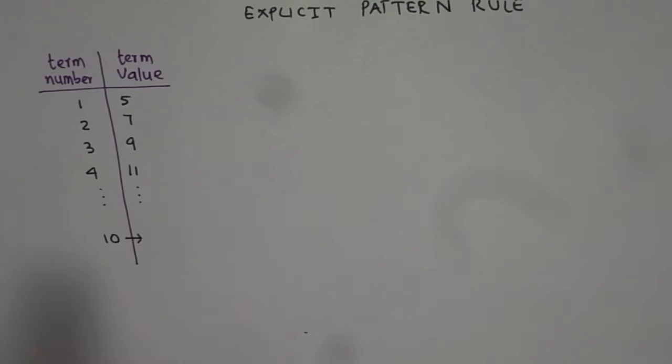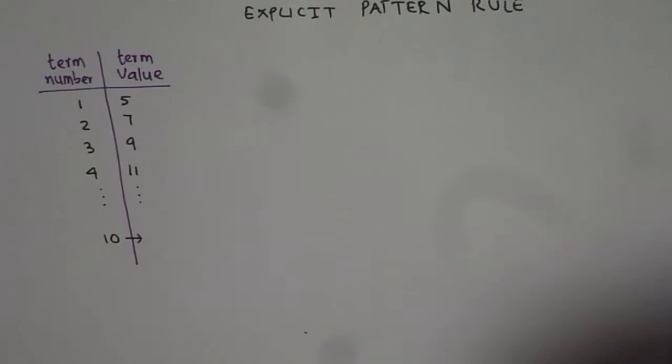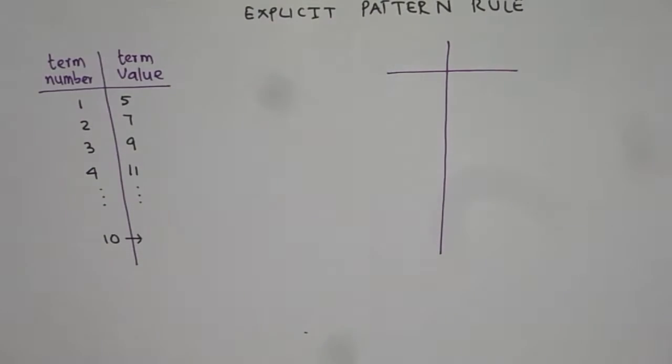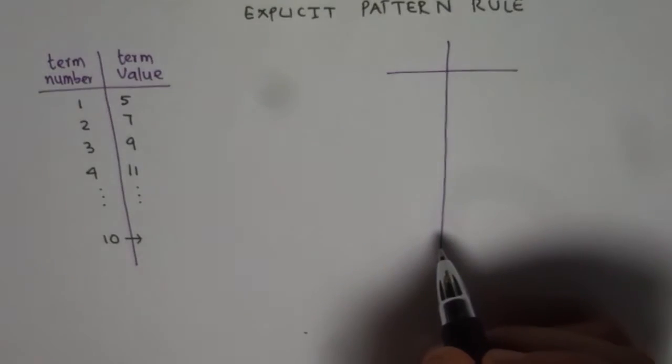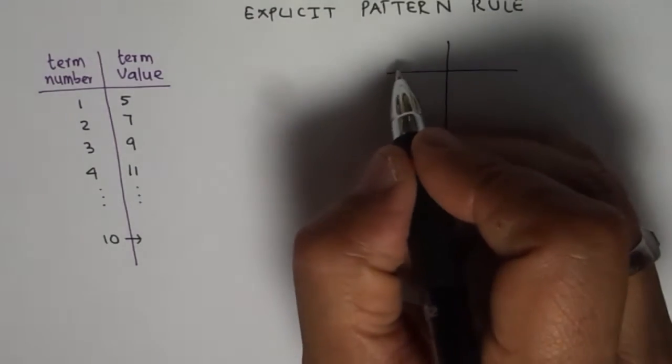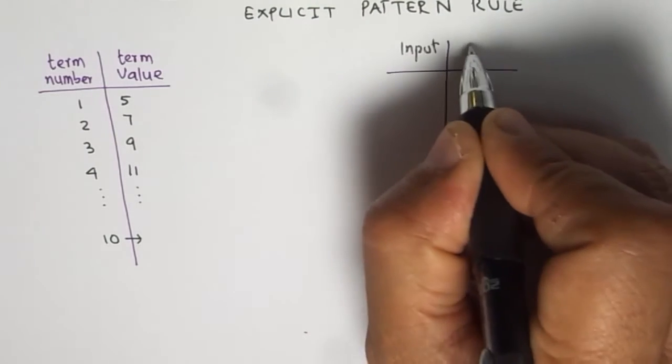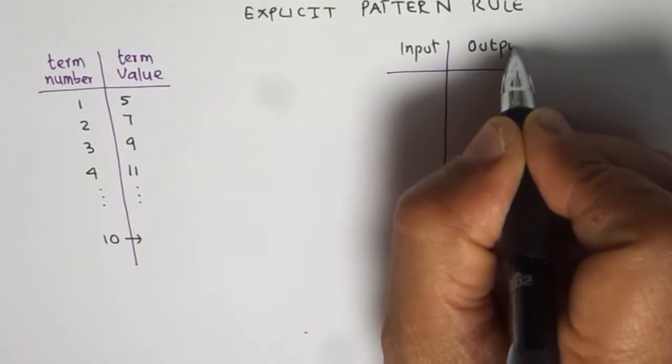So this is one example. I will give you one more example. So try this out. Meanwhile I am just writing another example for you. In this case we will have term numbers or we can call them as input on this side and output on the other side.